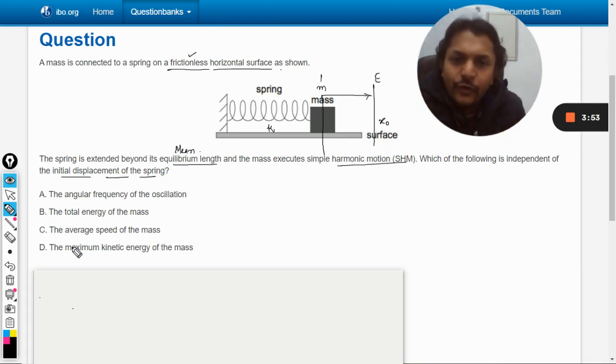Now, what is the thing which out of these four is independent of the amplitude? Number one: the angular frequency of the oscillation. Angular frequency, that is omega, omega equals 2π by capital T. Let us see. Yeah, I think this does not depend on the initial displacement.